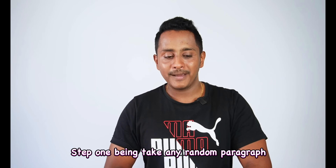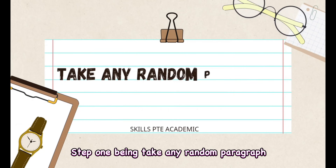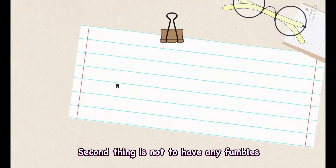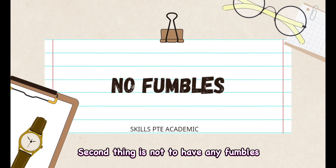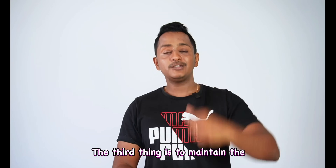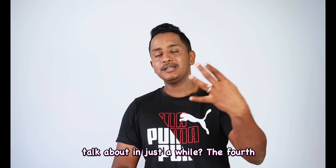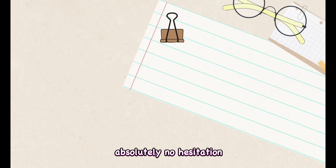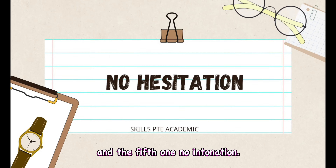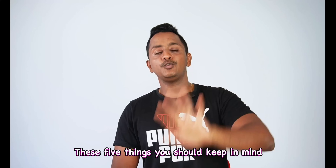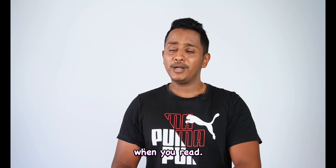Step one: take any random paragraph from the internet and read, read, read. The second thing is to not have any fumbles when you read. The third thing is to maintain continuity — we're going to talk about that in just a while. The fourth thing is absolutely no hesitation. And the fifth one — no intonation. These five things you should keep in mind when you read.